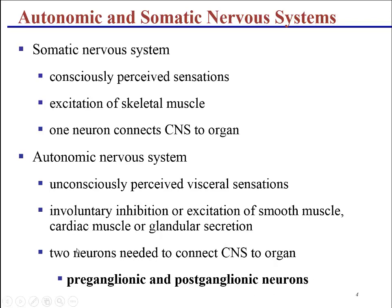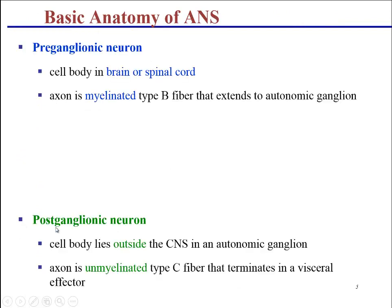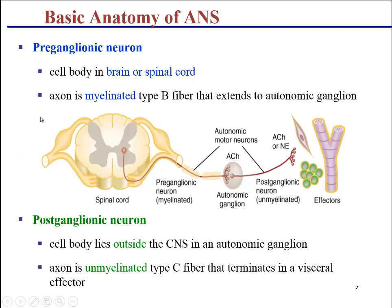You have what's known as the preganglionic and the postganglionic neurons. The preganglionic neuron's cell body is found in the brain or spinal cord, and it has a myelinated first axon that comes out to the autonomic ganglion. And then from the autonomic ganglion out to the effector, you have the postganglionic neuron, which is unmyelinated, and that will connect to either cardiac muscle, glands, or smooth muscle.